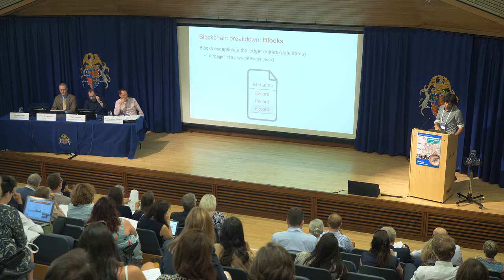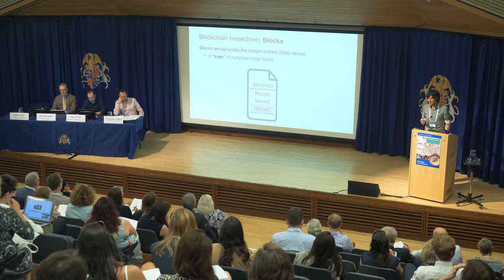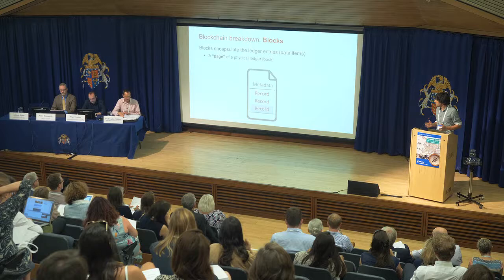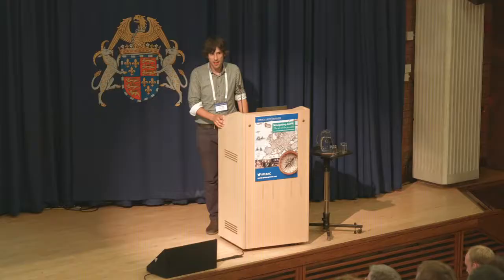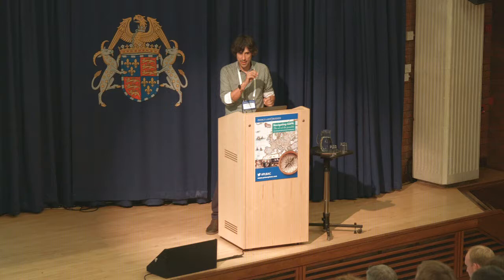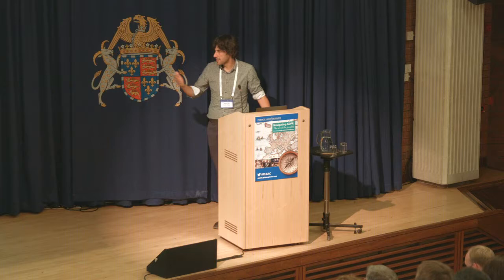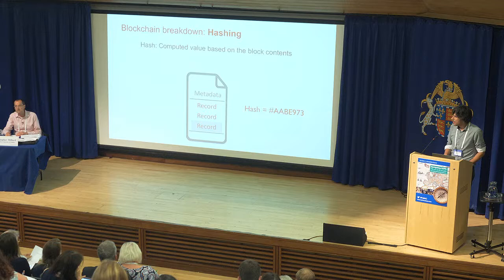Let's get on to the technology itself and start with the building blocks of blockchain. The first thing to consider is: what is a block? A block is essentially — you can think of it as a page in a traditional hard-copy ledger. It encapsulates a bunch of ledger entries, a bunch of transactions, with some extra metadata attached. Just as in a physical ledger book you have a page with metadata such as the page number and then a series of transactions, a block is very much the same: a series of records with some metadata associated with it.